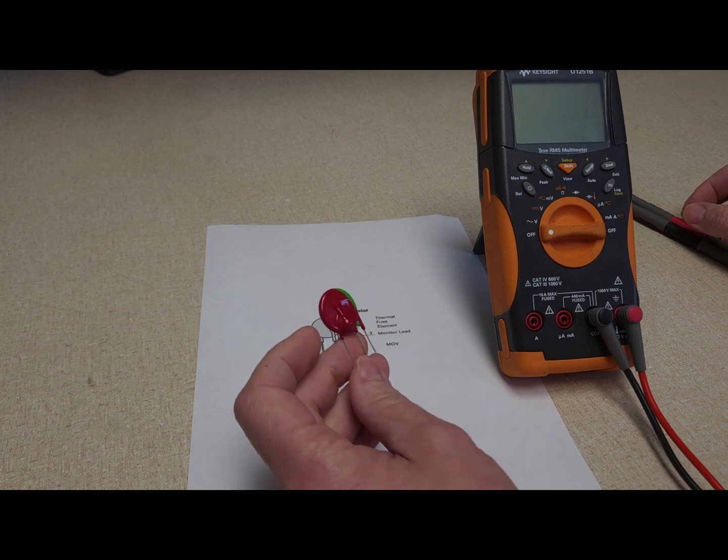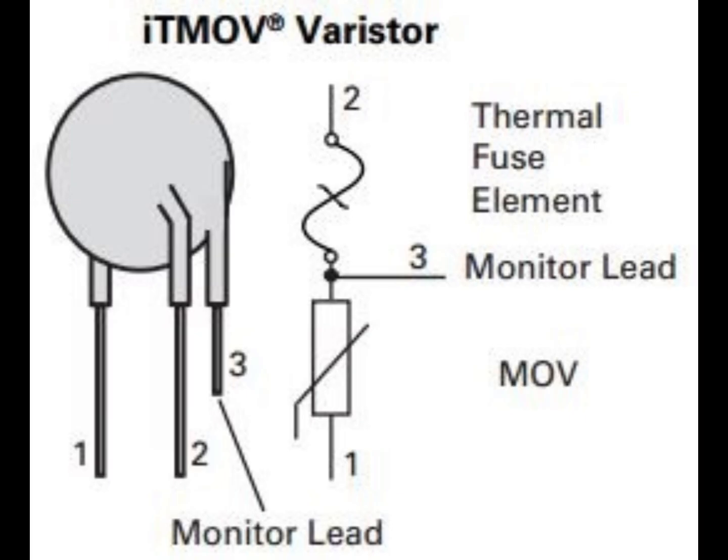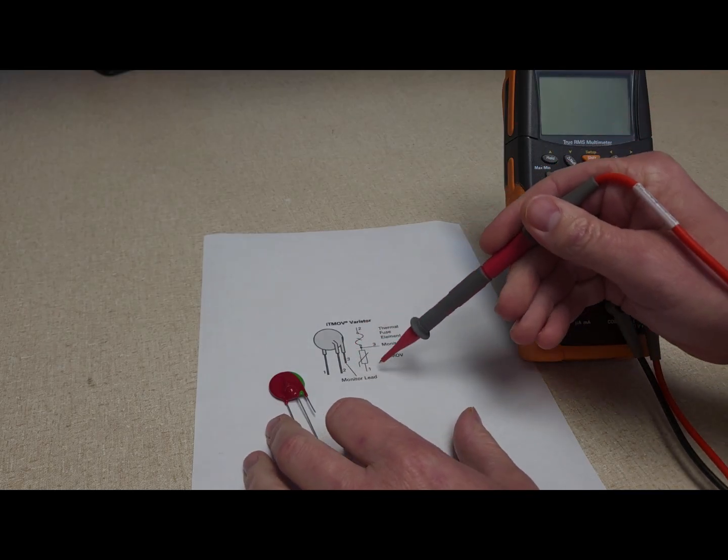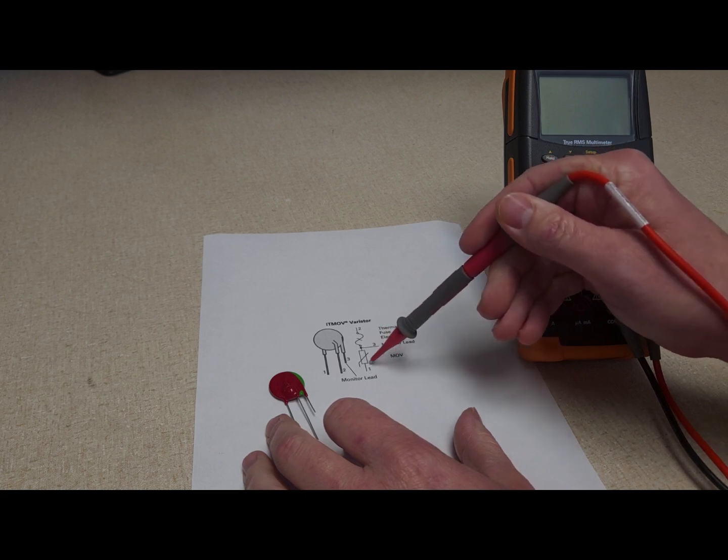These are made by Littlefuse and as you can see from the drawing and schematic here, there's three legs. Inside internally you have an MOV and this is the part that absorbs the surge, and then you have the monitor lead which has a thermal fuse.